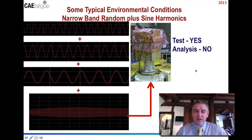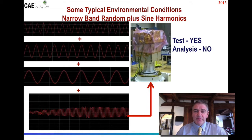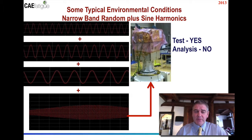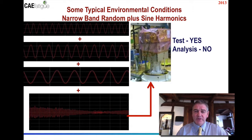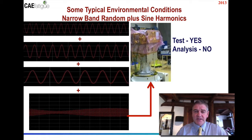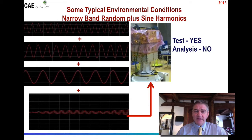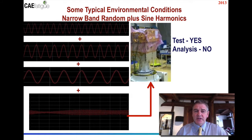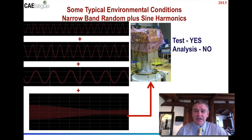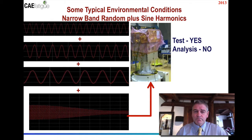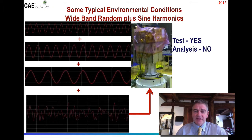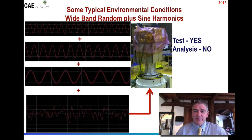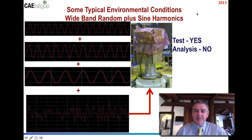Problems really start to arise in analysis when you try to mix random inputs with deterministic inputs. A typical test scenario involves narrowband random applied simultaneously with a series of sine wave harmonics — reasonably easy to do in a test environment, but very problematic in an analysis procedure. We really only have one option currently: to do the analysis in the time domain, which is quite impractical. This is also true for wideband random plus sine harmonics, or wideband random with a sine sweep. From a test perspective these are straightforward, but from an analysis perspective they force us into the time domain, which is again quite impractical.